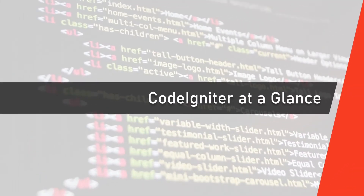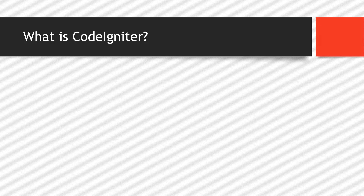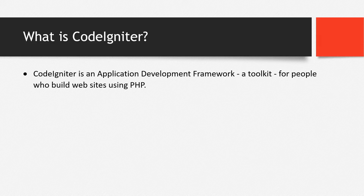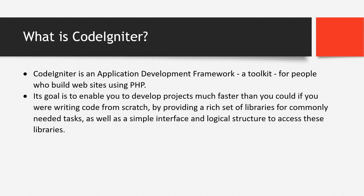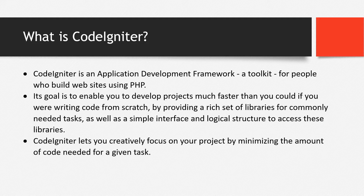So now let's talk about CodeIgniter. CodeIgniter is an application development framework — a toolkit for people who build websites using PHP. Its goal is to enable you to develop projects much faster than you could if you were writing code from scratch, by providing a rich set of libraries for commonly needed tasks, as well as a simple interface and logical structure to access these libraries. CodeIgniter lets you creatively focus on your project by minimizing the amount of code needed for a given task.